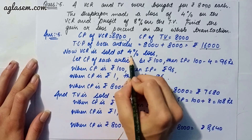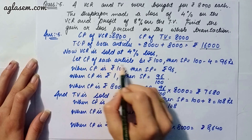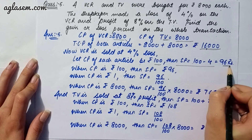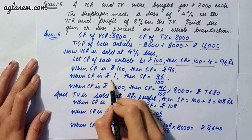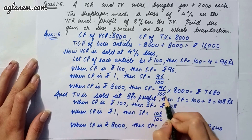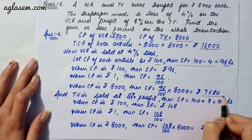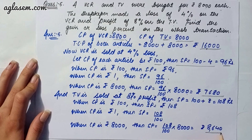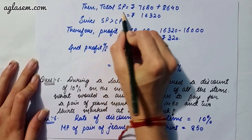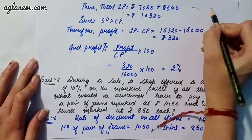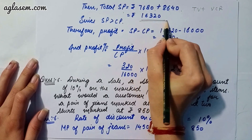The VCR is sold at 4 percent loss. If cost price is rupees 100, selling price is 100 minus 4, that is 96. So if CP is 8000, selling price of VCR is 96 upon 100 into 8000, giving rupees 7680. Similarly, selling price of TV is rupees 8640. Total selling price is 7680 plus 8640, giving 16320.